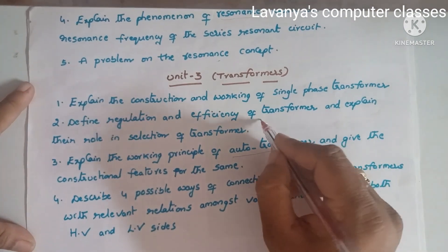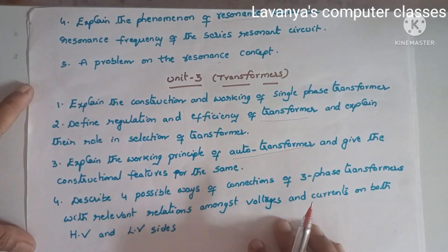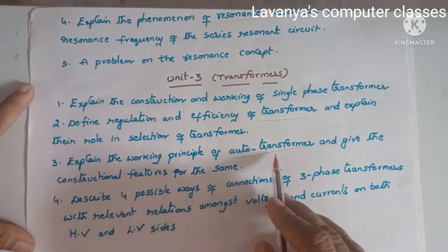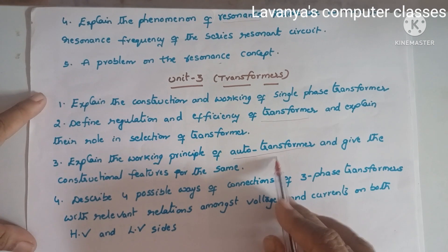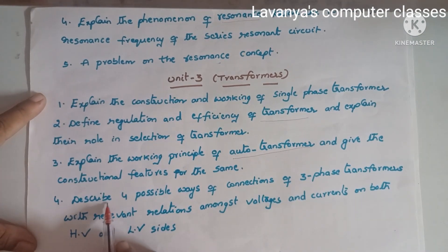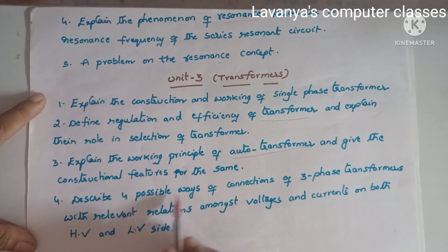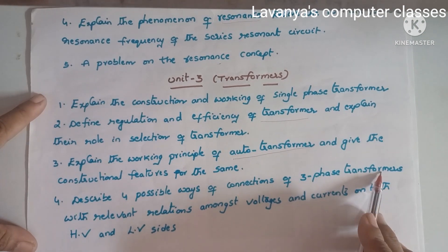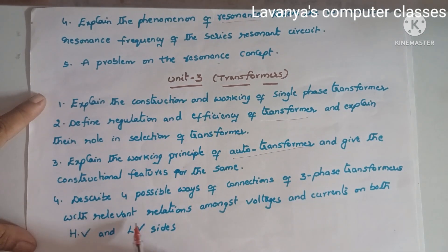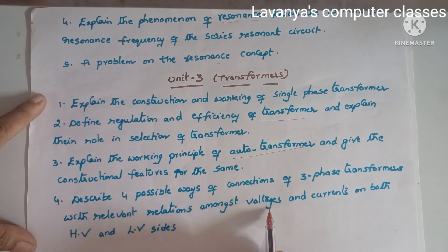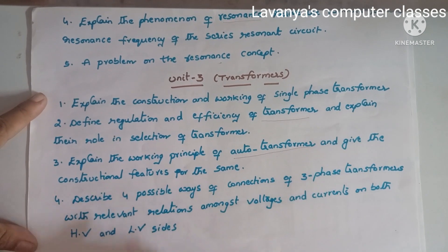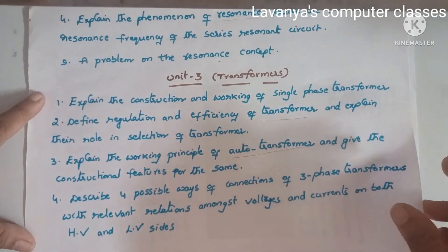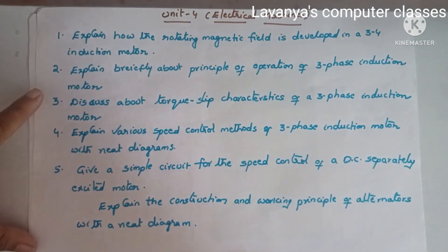Auto-transformers, single-phase transformer, transformer — all the questions are coming from transformers. Fourth question: describe four possible ways of connections of a three-phase transformer with relevant relations amongst voltages and currents on both HV and LV sides. These are the important questions in Unit 3.